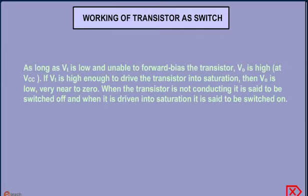Working of transistor as a switch: As long as VI is low and unable to forward bias the transistor, VO is high at VCC. If VI is high enough to drive the transistor into saturation, then VO is low, very near to zero. When the transistor is not conducting, it is said to be switched off, and when it is driven into saturation, it is said to be switched on.